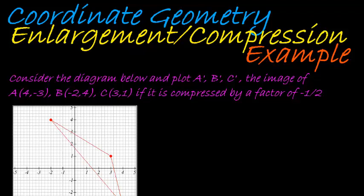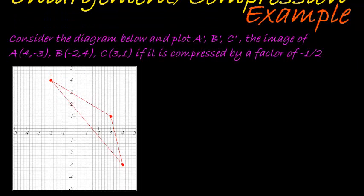Okay, now we get to our last type of transformation that we will look at, and that is an enlargement or a compression. So here they tell us to consider the diagram below and plot A, B, and C accents, the image of A, B, and C if it is compressed by a factor of negative one-half. Now, once again, all that means is that each one of the coordinates gets multiplied with negative one-half.